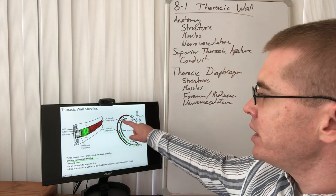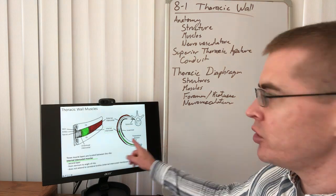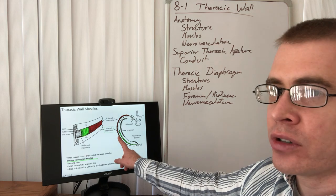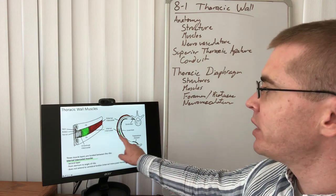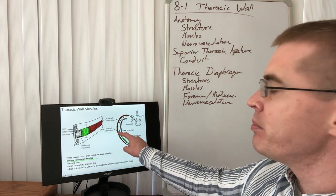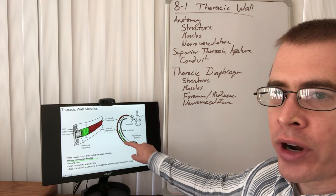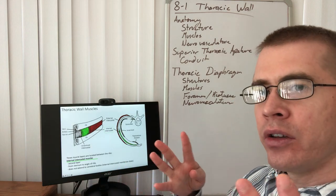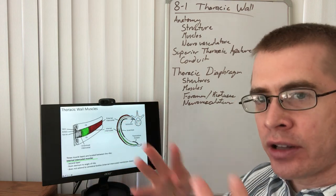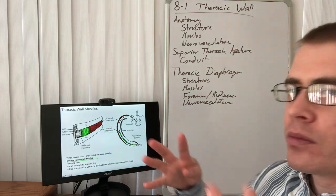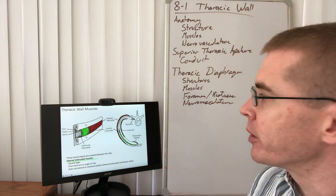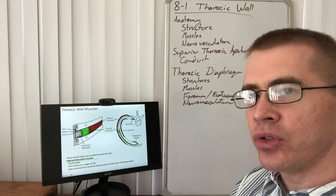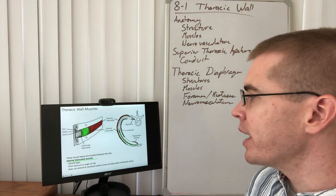To see the internal intercostal muscle, you need to pierce through the external intercostal and look deep to that at about the midaxillary line or more anteriorly. These fibers are running superiorly and anteriorly, up toward the sternum — that's another way to differentiate these muscles when looking at them.